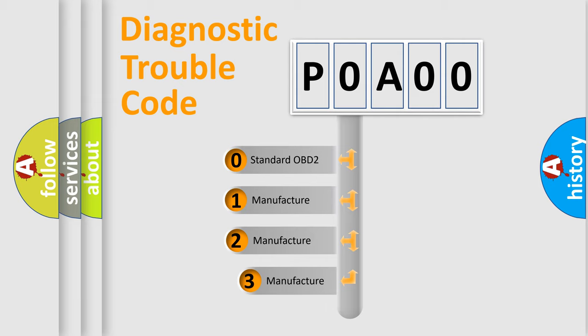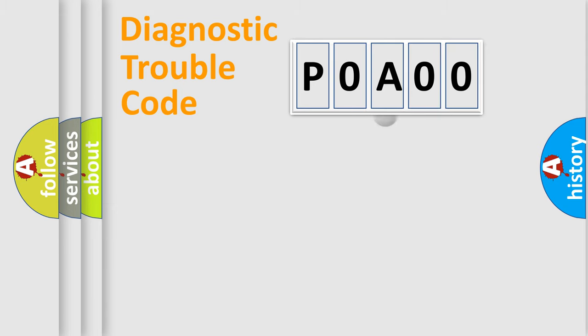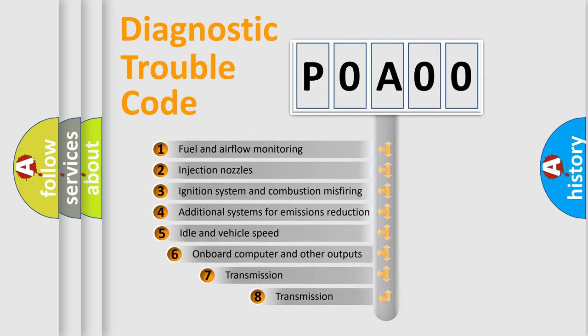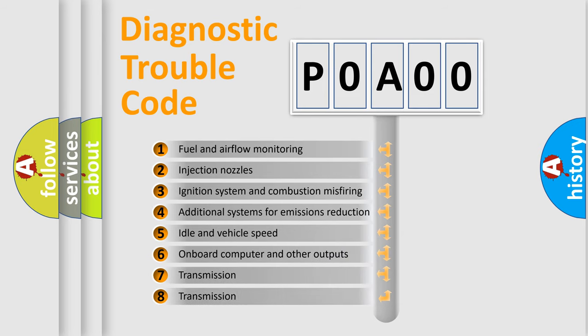If the second character is expressed as zero, it is a standardized error. In the case of numbers 1, 2, or 3, it is a more specific expression of the car-specific error.